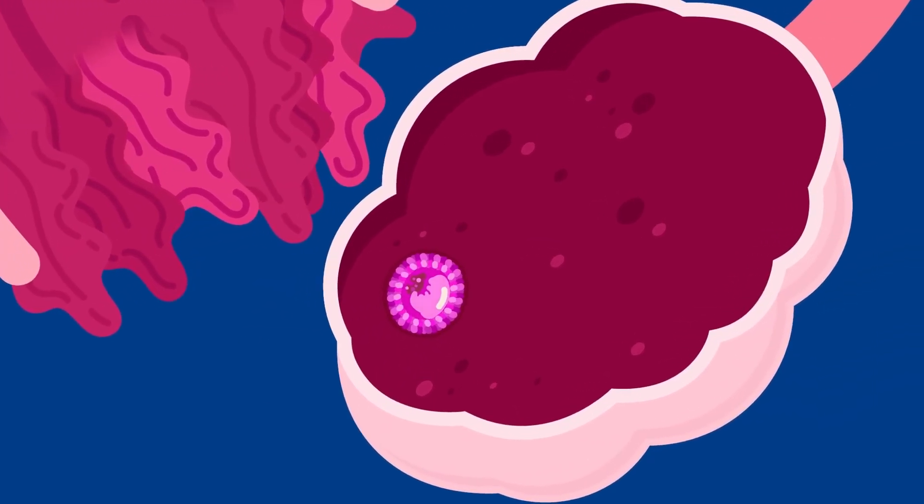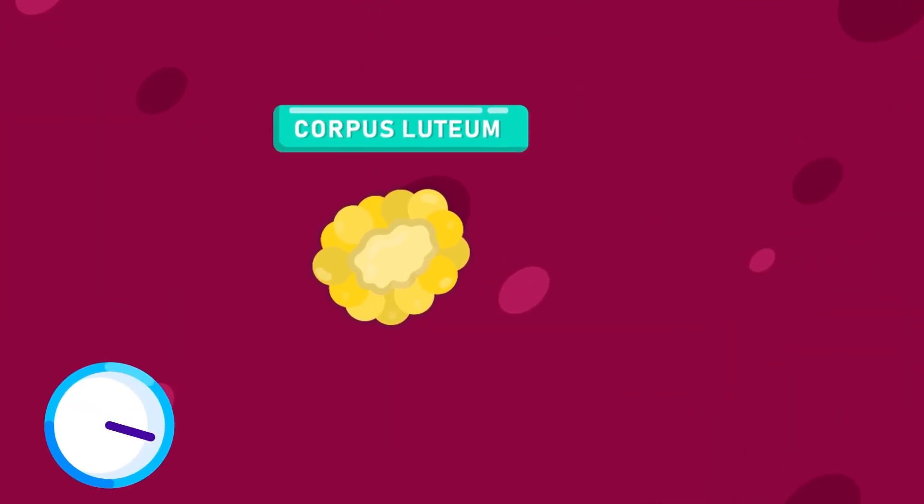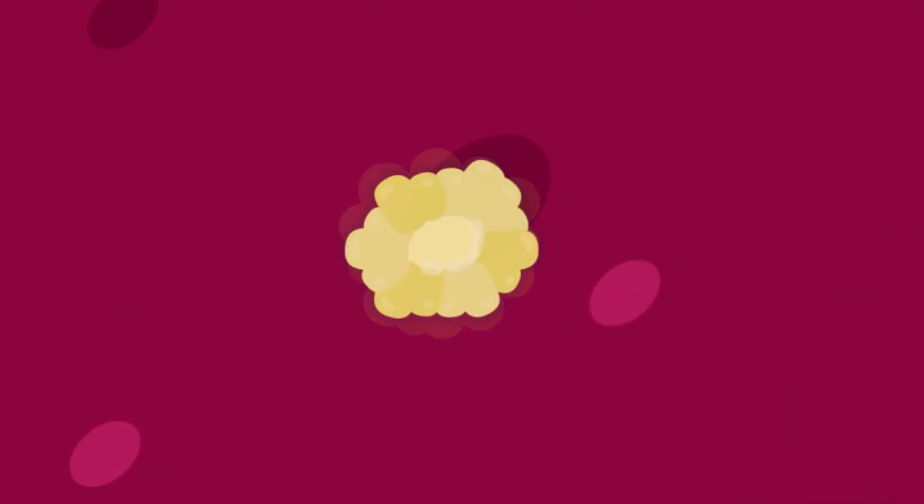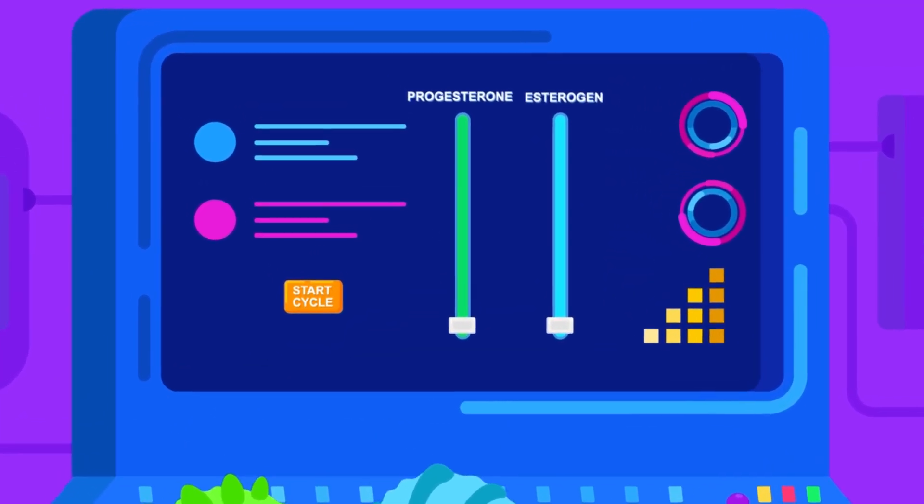After the ovulation, the leftover follicle develops into corpus luteum. The corpus luteum will still persist for some time and then break down. The production of hormones will be stopped, and the menstrual cycle will start over.